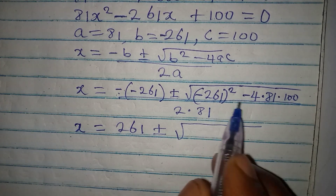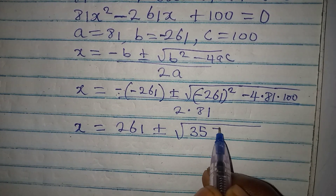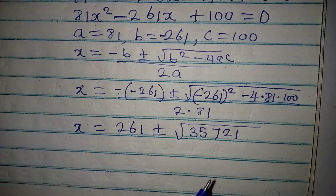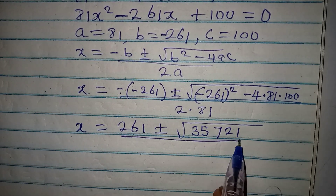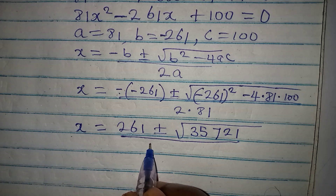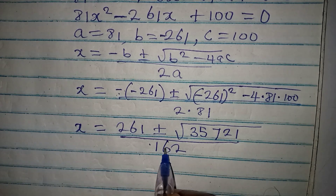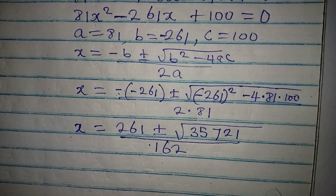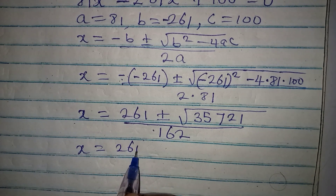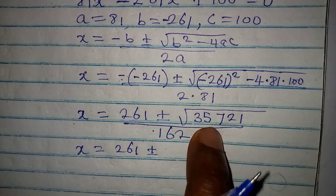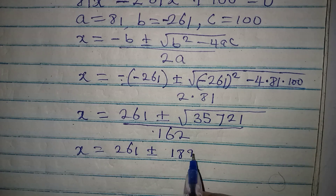Computing the discriminant: 261 squared minus 4 times 81 times 100 gives 35,721. The square root of 35,721 is 189. And 2 times 81 gives us 162. So x equals 261 plus or minus 189, over 162.